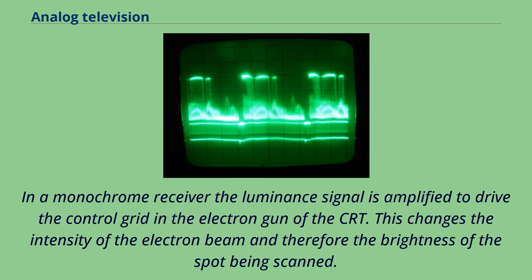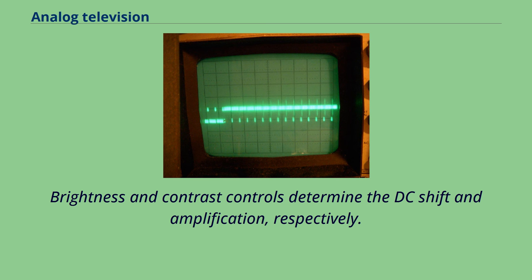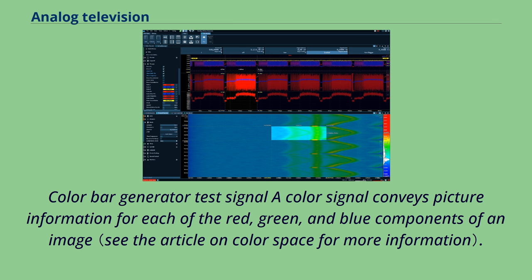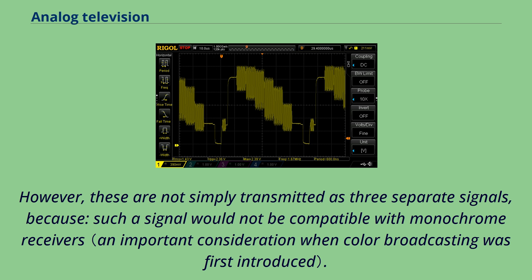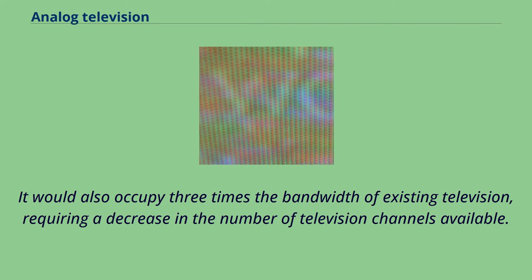A color signal conveys picture information for each of the red, green, and blue components of an image. However, these are not simply transmitted as three separate signals, because such a signal would not be compatible with monochrome receivers. It would also occupy three times the bandwidth of existing television, requiring a decrease in the number of television channels available.